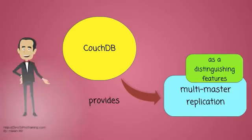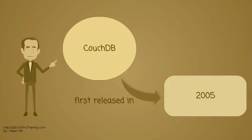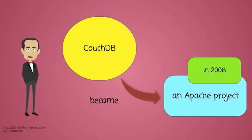One of its distinguishing features is multi-master replication. CouchDB was first released in 2005, and later it became an Apache project in 2008.